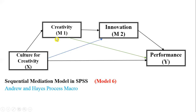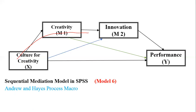There are some other parts available when analyzing the sequential mediation model that will also help us analyze additional paths. If you look carefully, the sequential mediation path goes from the independent variable through creativity, then innovation, then to performance. So this is one part — you can say this is our sequential mediation path: IV to DV through two mediators.